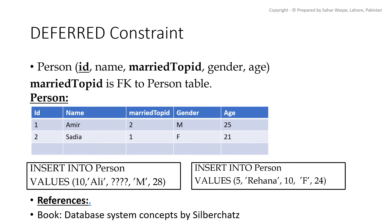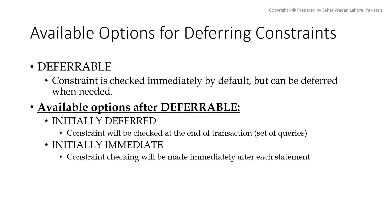There is also another option. After running query 1, if we add null in married_to_PID for Ali, and after that we run query 2, once both are inserted, we can update the married_to_PID in query 1. However, this technique requires more programming effort and does not work if the attribute cannot be set to null. So, as discussed, we need some kind of option to defer our constraint checking until the task has been completed.